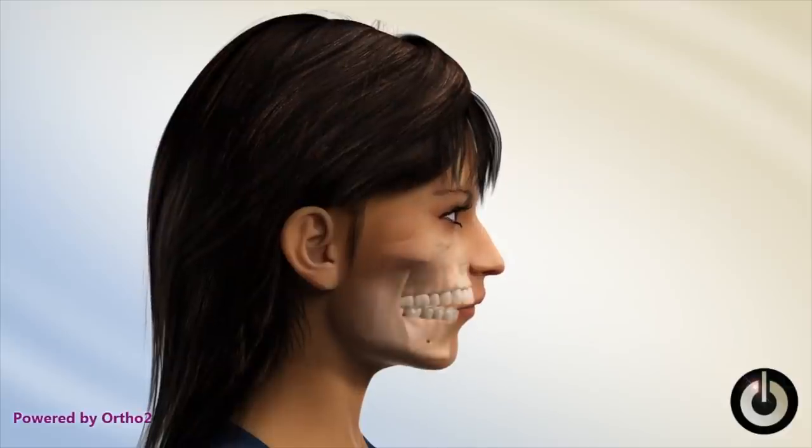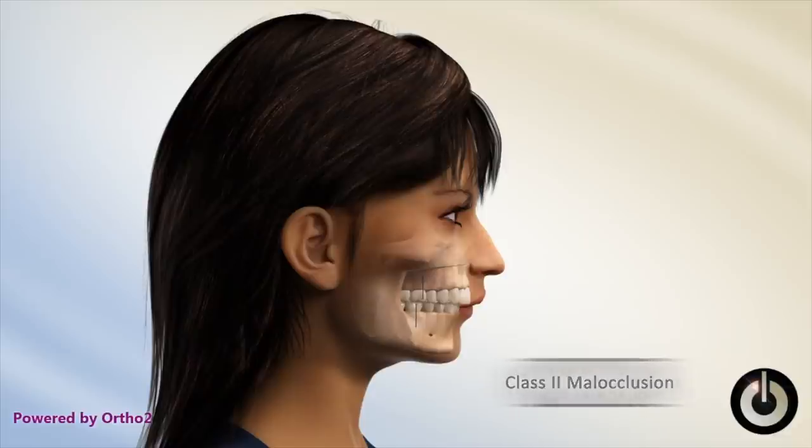For more moderate to severe open bites in later adolescence or adults — where elastics and habit therapy aren't enough — we might have to use jaw surgery or extractions. Extractions can bring upper or lower teeth back to close the open bite. Jaw surgery can push the upper jaw upward, since many of these cases involve vertical growth of the upper jaw leading to a longer face. Surgically impacting the upper jaw allows the lower jaw to swing shut and fixes the open bite.